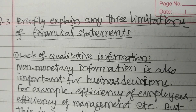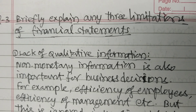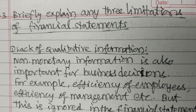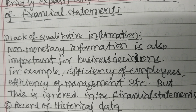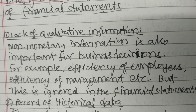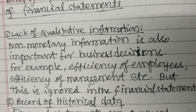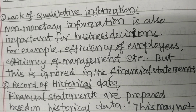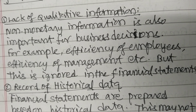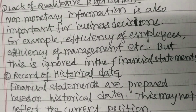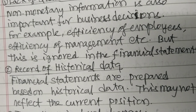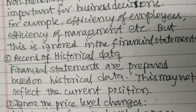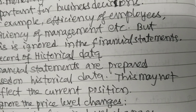Lack of qualitative information. Non-monetary information is also important for business decisions. For example, efficiency of the employees, efficiency of management, etc. But this is ignored in the financial statements.